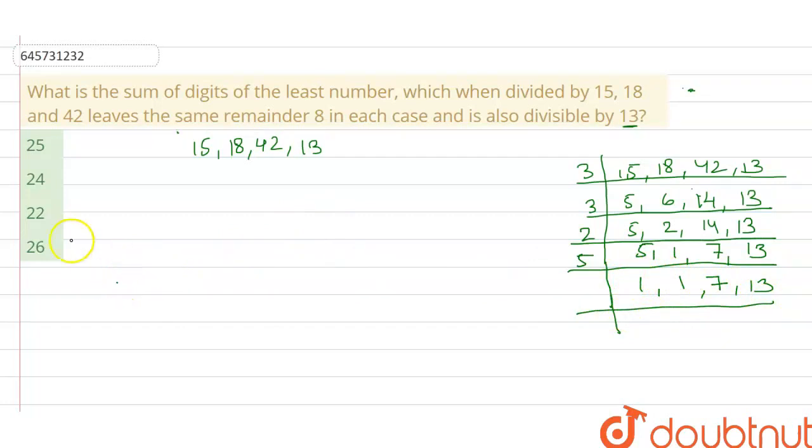So LCM is equal to 3 multiply 3 multiply 2 multiply 5 multiply 7 multiply 13. 3 times 3 is 9, times 2 is 18, times 5 is 90, times 7 is 630, times 13 is... The LCM will be 8,190.